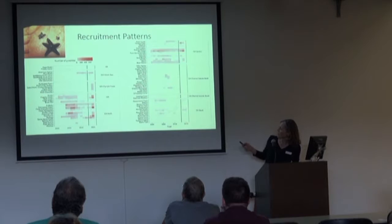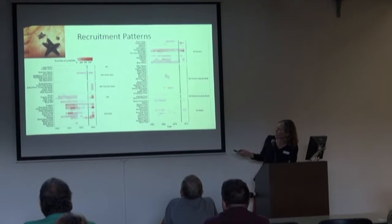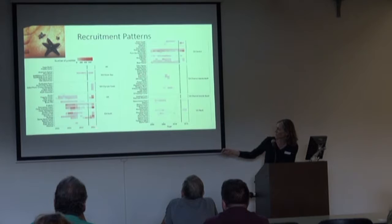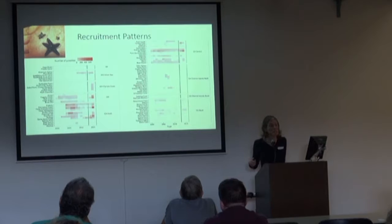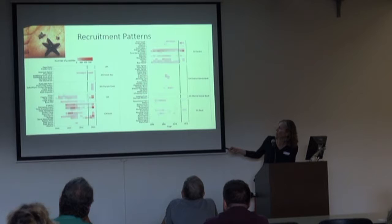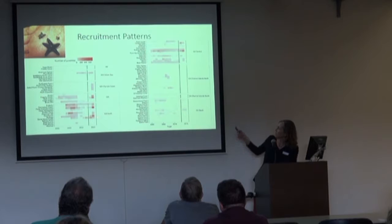If we look at our data across this whole range — again going from Alaska to Northern California and then Central California down to Southern California — these bars now represent the number of juveniles we counted at each site, going from 2000 to 2015. Again, 2013 is when we first started to see the disease. There are some areas that have had pretty consistent recruitment for a number of years, and there are even some sites where the darker bars — indicating higher numbers of juveniles — show pretty good recruitment post sea star wasting disease.